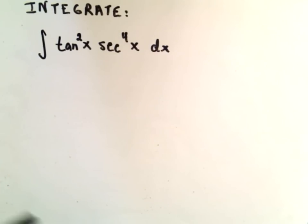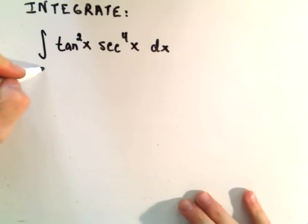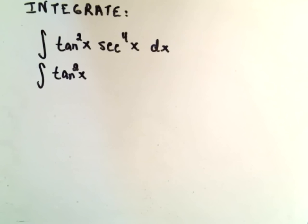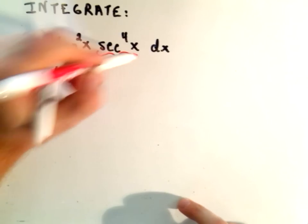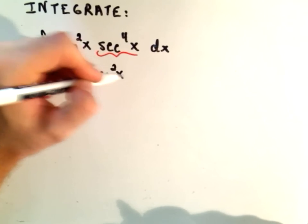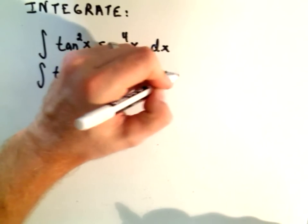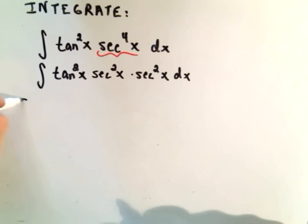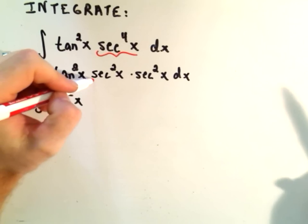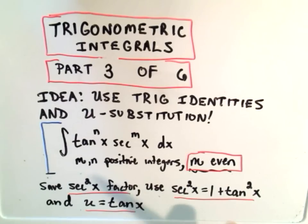Okay, so in this case we've got tangent squared times secant to the fourth. Alright, well let's do what we just said we're going to do. We'll bust up our secant to the fourth as secant squared times secant squared. Okay, and then we're going to use our trig identity.